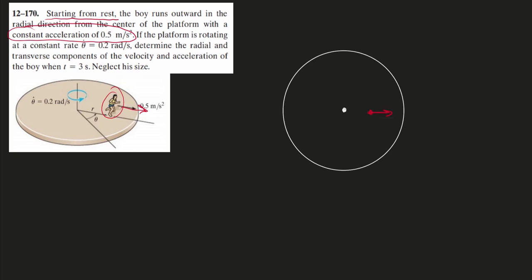As this boy runs outwards, this whole circular plate is going to be rotating, so at some later time he'll be more outwards and at a different angle. This acceleration is the acceleration he is creating.